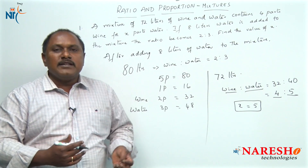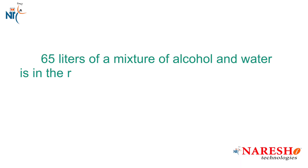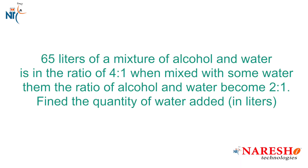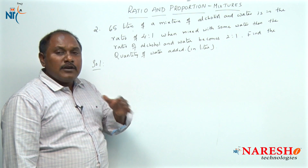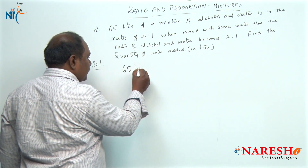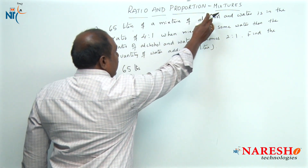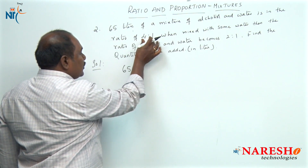This is how you can solve this problem in a simple way. Now let us look into one more problem. 65 liters of a mixture of alcohol and water is in the ratio of 4 is to 1. When mixed with some water, the ratio of alcohol and water becomes 2 is to 1. Find the quantity of water added. This problem can be solved in two ways. Let us look into the first method. Initially we have 65 liters of a mixture in which we have alcohol and water in the ratio of 4 is to 1.